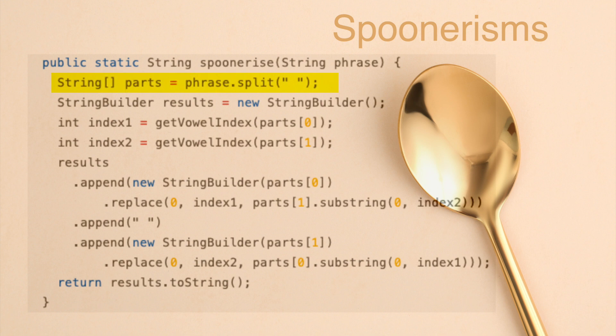First, since we know our phrase contains only two words, we define an array of strings named parts, split the incoming string into two parts, and assign the result to the parts array. Next, we instantiate a string builder named results that will contain the results of our algorithm.